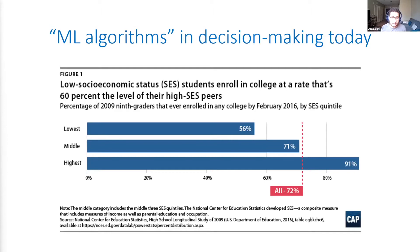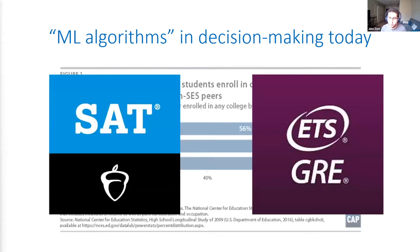We know that historically, admissions have partially relied on test scores such as the SAT or the GRE. We can see the SAT and GRE as algorithms that take students' answers as input and map them to a score — that score is supposed to give some insight into their qualification level, their level of preparation for college.